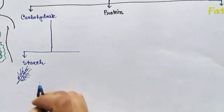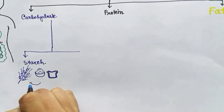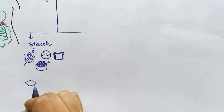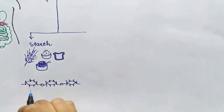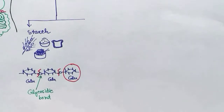Starch is one type of carbohydrate which is found in most grains. If you are eating rice, bread, or noodles, you are eating starch. Starch is a polymer of glucose molecules — that means starch has lots of glucose molecules bonded to each other by glycosidic bonds. The purpose of digestion is to break these bonds so that we can get free glucose molecules that can be absorbed by our body.